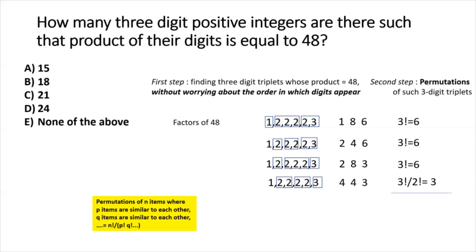Adding all permutations together: 6 + 6 + 6 + 3 = 21. So the total number of three-digit positive integers whose product of digits equals 48 is 21, which corresponds to answer choice C.